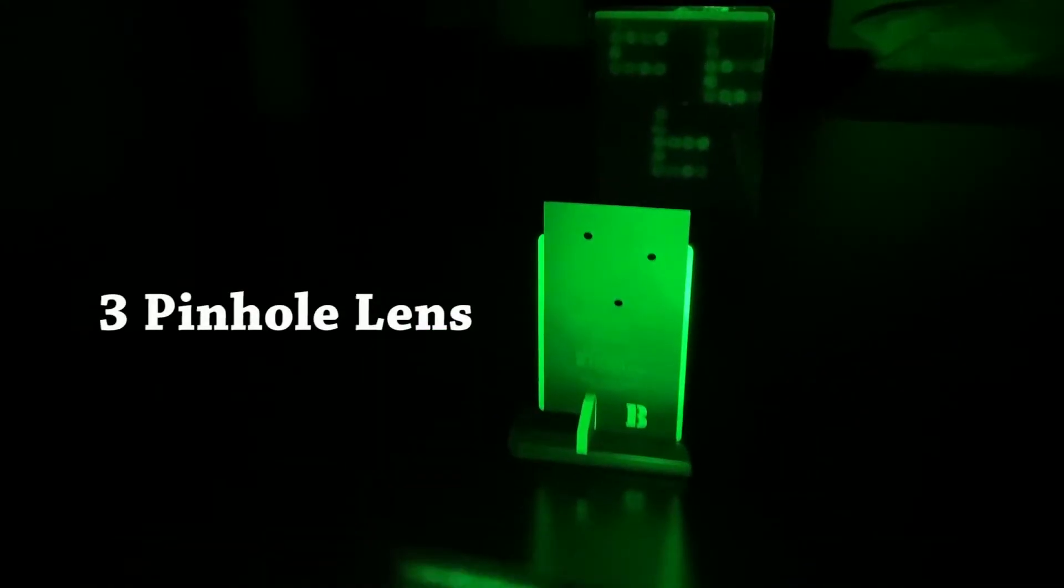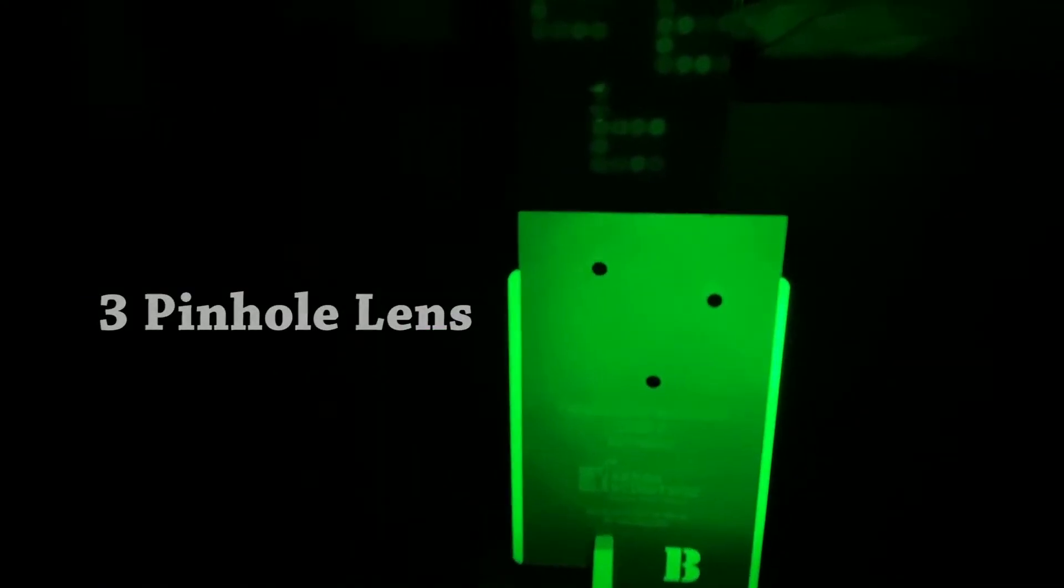In this case, we see the B card, which is a three-pinhole lens. And each of these images is in a different location. Pinhole lenses can project real images, but they do not combine light, so the image they produce is always dim.